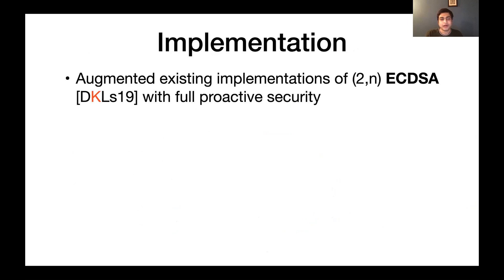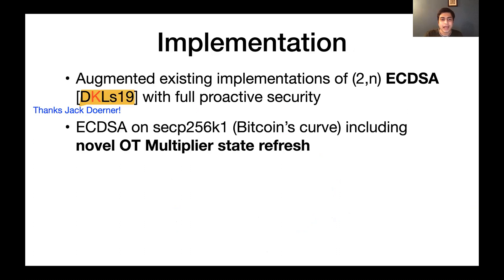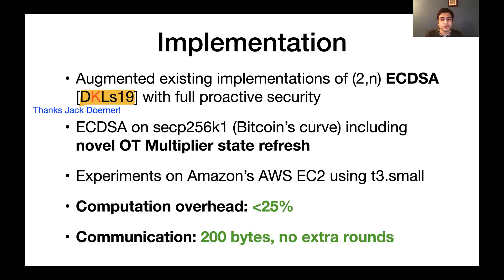We implement this proactivization scheme to proactivize an existing 2-of-N threshold ECDSA protocol. Thanks to Jack Doerner for this. And also, threshold ECDSA is more complicated than threshold Schnorr. It needs some additional machinery for multiplication. And so we also have to construct some multiplier state refresh protocols, which you'll find in the paper. Our experiments showed that there's very reasonable overhead for both computation and network costs.